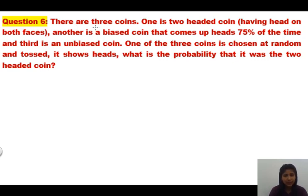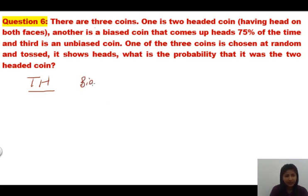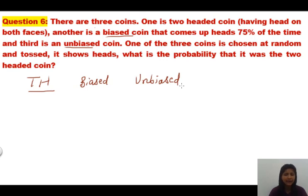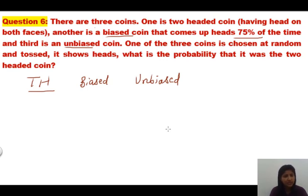They are saying there are 3 coins. The first one is a 2-headed coin. The second is a biased coin. The third one is an unbiased coin. Unbiased means the probability of coming up head is equal — half and half. Biased means, as written here, another is a biased coin that comes up heads 75% of the time. When you throw it, 75% of the time you are going to get a head.